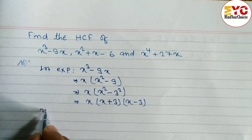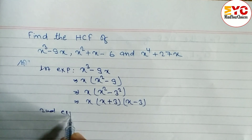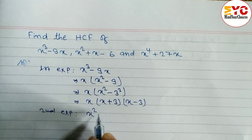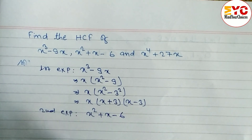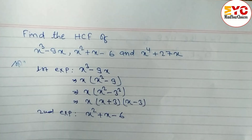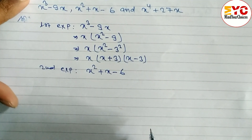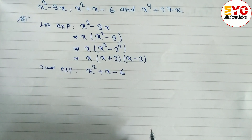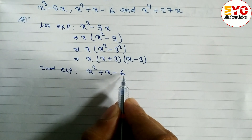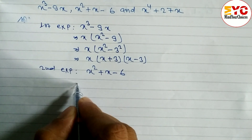After that we have to look at the second expression. You can see here: x square plus x minus six. Now we have to factorize this. We have to find that type of factors whose multiplication is six and whose difference is one.